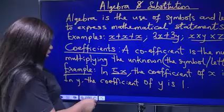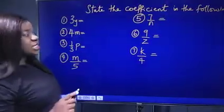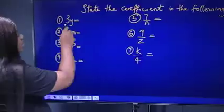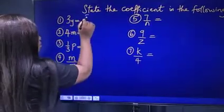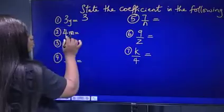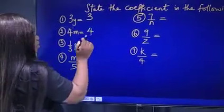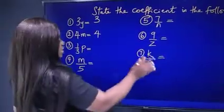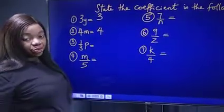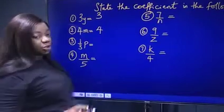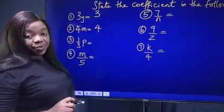Now let's see examples — state the coefficient in the following. In 3y, the coefficient of y is 3. In 4m, the coefficient of m is 4. All these that have been listed are called algebraic terms and also algebraic expressions.